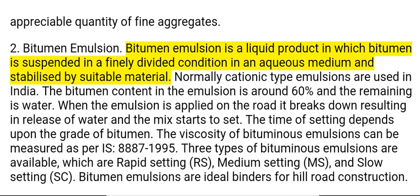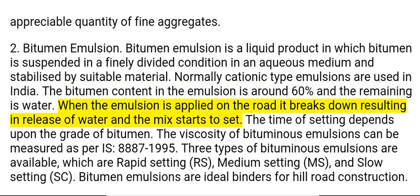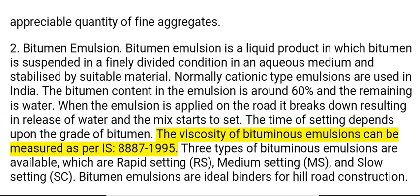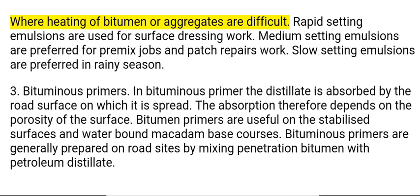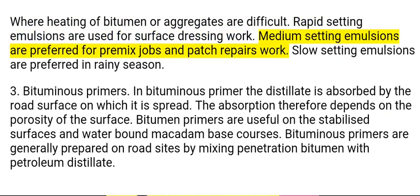2. Bitumen Emulsion. Bitumen emulsion is a liquid product in which bitumen is suspended in a finely divided condition in an aqueous medium and stabilized by suitable material. Normally cationic type emulsions are used in India. The bitumen content in the emulsion is around 60% and the remaining is water. When the emulsion is applied on the road it breaks down, resulting in release of water, and the mix starts to set. The time of setting depends upon the grade of bitumen. The viscosity of bituminous emulsions can be measured as per IS-8887-1995. Three types of bituminous emulsions are available: rapid setting, medium setting, and slow setting. Bitumen emulsions are ideal binders for hill road construction where heating of bitumen or aggregates is difficult. Rapid setting emulsions are used for surface dressing work. Medium setting emulsions are preferred for premix jobs and patch repairs. Slow setting emulsions are preferred in rainy season.